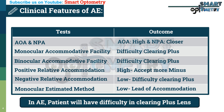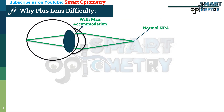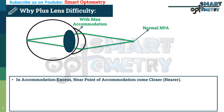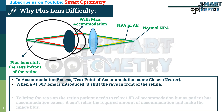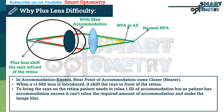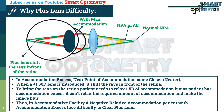Remember, in accommodation excess, the patient will have difficulty in clearing the plus lens. Why does accommodative excess cause difficulty in clearing the plus lens? In accommodation excess, the near point of accommodation comes closer. When a +1.5 diopter lens is introduced, it shifts the rays in front of the retina. To bring the rays back onto the retina, the patient needs to relax 1.5 diopters of accommodation. But as the patient has accommodation excess, they cannot relax the required amount of accommodation, making the image blurred. Thus, in accommodative facility and negative relative accommodation, patients with accommodation excess face difficulty clearing the plus lens.